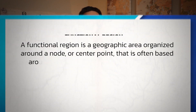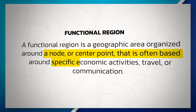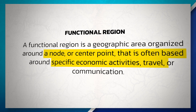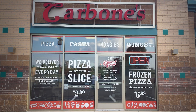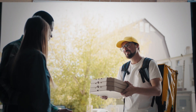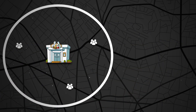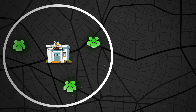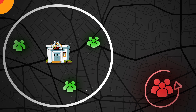A functional region is a geographic area organized around a node or center point that is often based around specific economic activities, travel, or communication. We can see examples of functional regions created by restaurants like Jimmy John's, Erberts and Gerberts, or your local pizza place, all of which deliver food to a certain number of homes near their store. Each store has its own functional region, and as long as you live in that region, you can get food delivered — but if you live outside the region, you'll have to order from a different store.